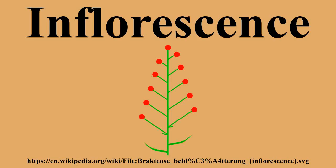In determinate inflorescences the terminal flower is usually the first to mature, while the others tend to mature starting from the bottom of the stem — this pattern is called acropetal maturation. When flowers start to mature from the top of the stem maturation is basipetal, while when the central flowers mature first it is divergent. As with leaves, flowers can be arranged on the stem according to many different patterns; see phyllotaxis for in-depth descriptions.